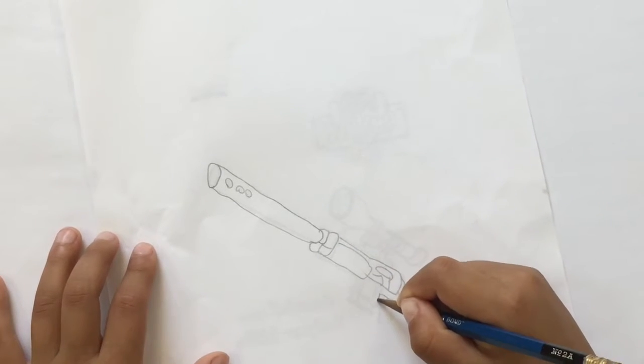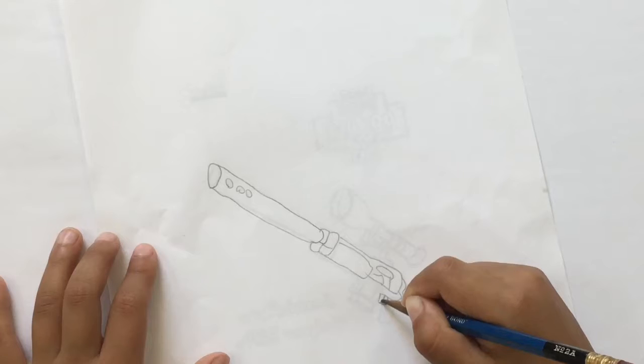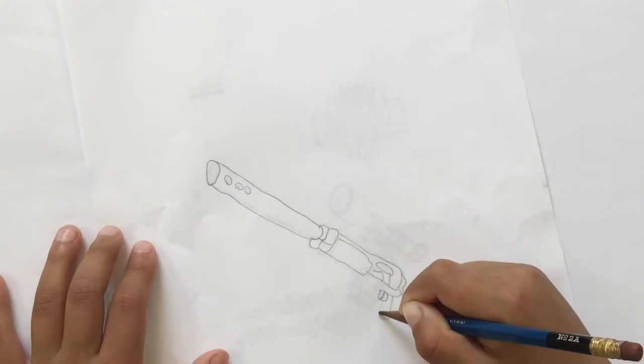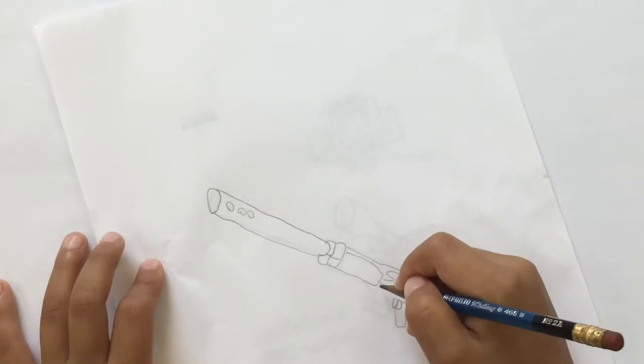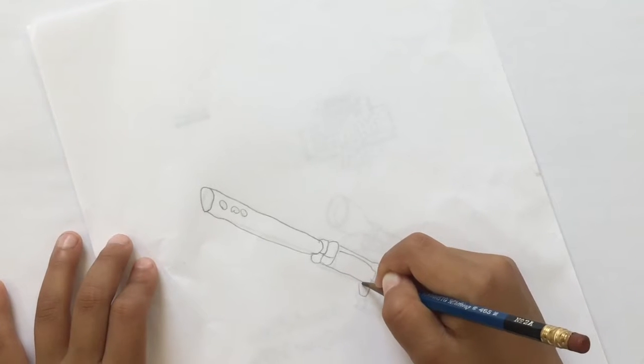Then we do this and this and draw the trigger, and the handle, and then whatever this is.